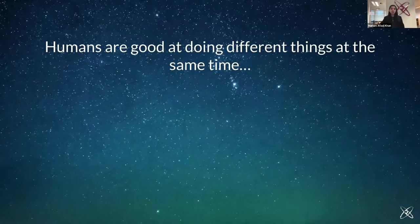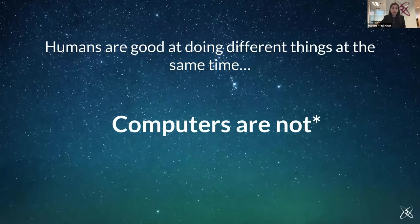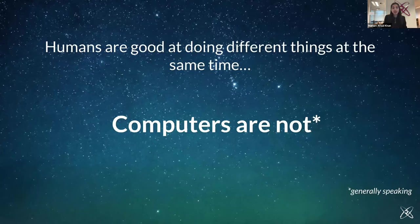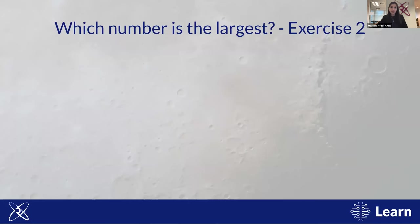Humans are good at doing different things in parallel. In contrast, computers are generally not so good at this. Computers are instead very good at single calculations — performing millions or billions of them every second — which may give the illusion of doing multiple things simultaneously, when in reality they're not. Keeping this in mind, let's turn our attention to the way a computer might solve the same problem. The task is to find the largest number, but this time presented in a slightly different way.